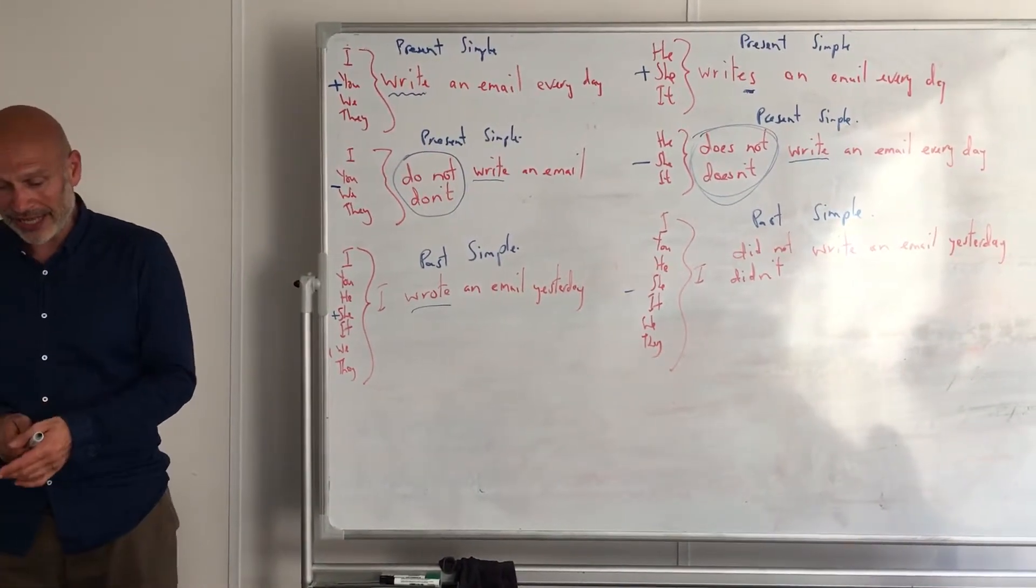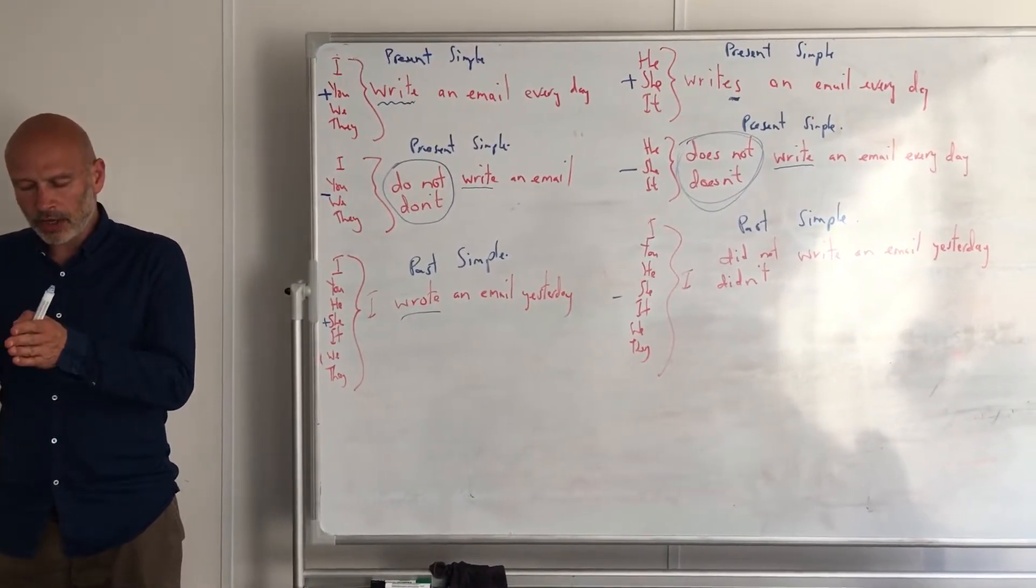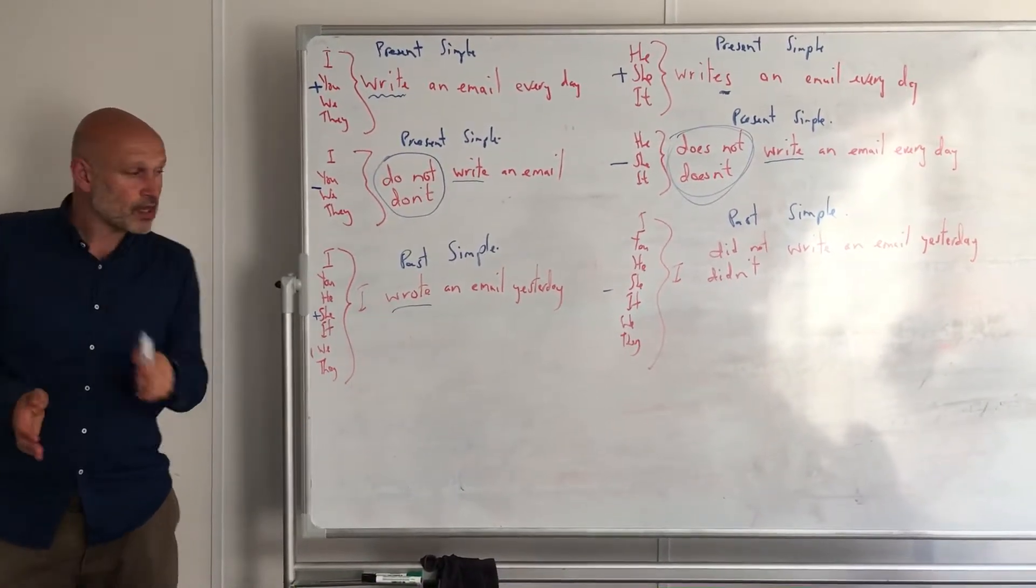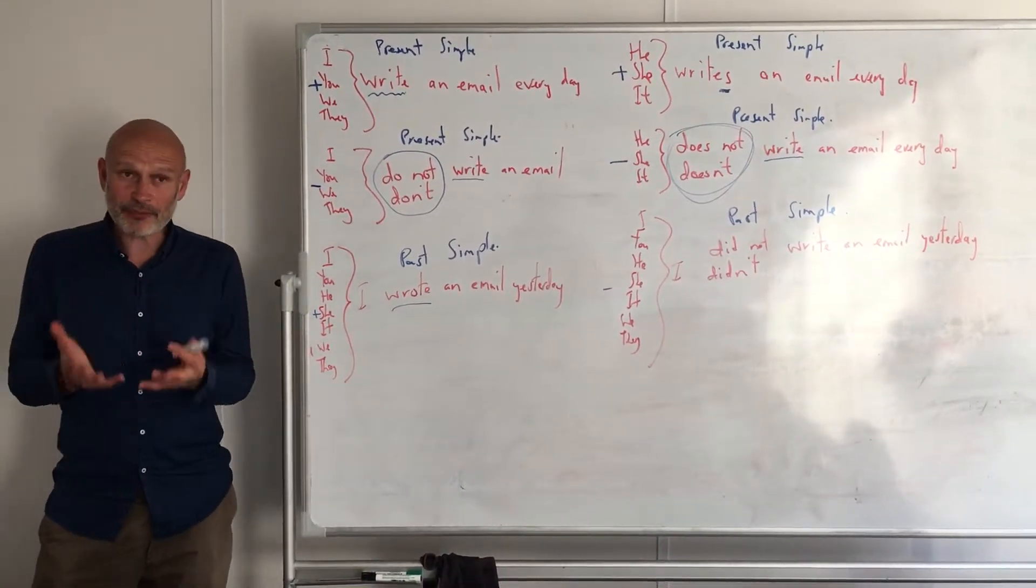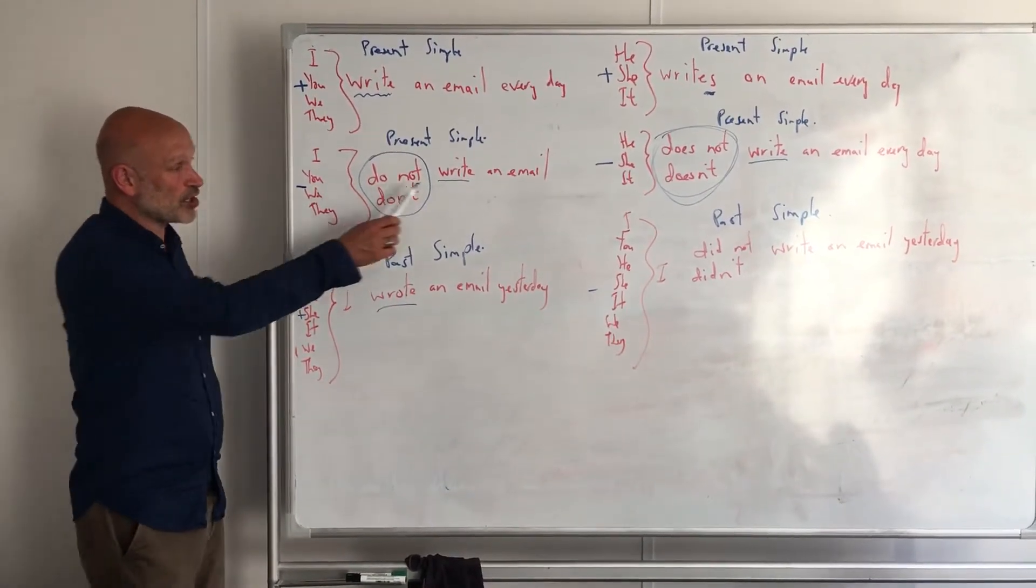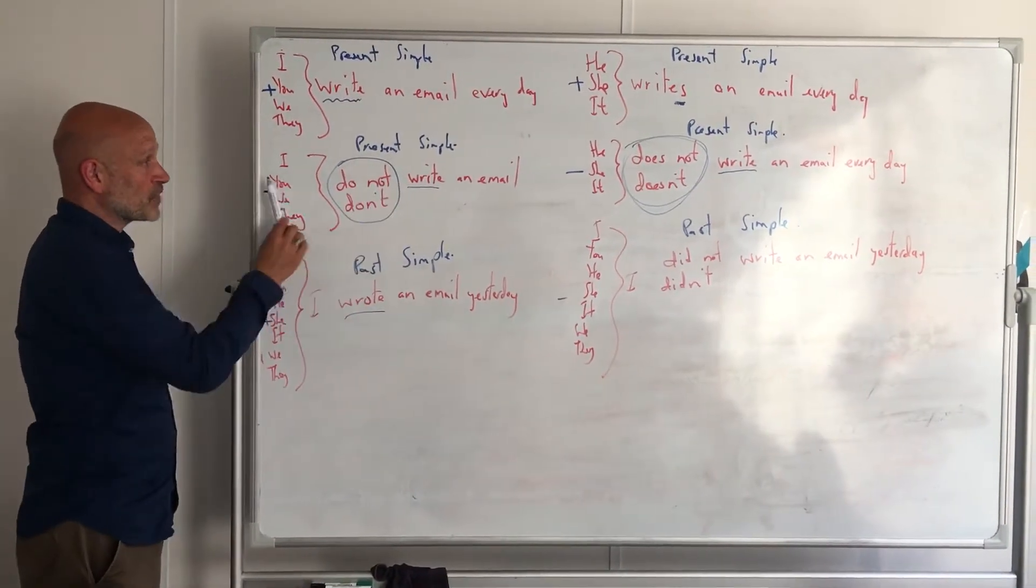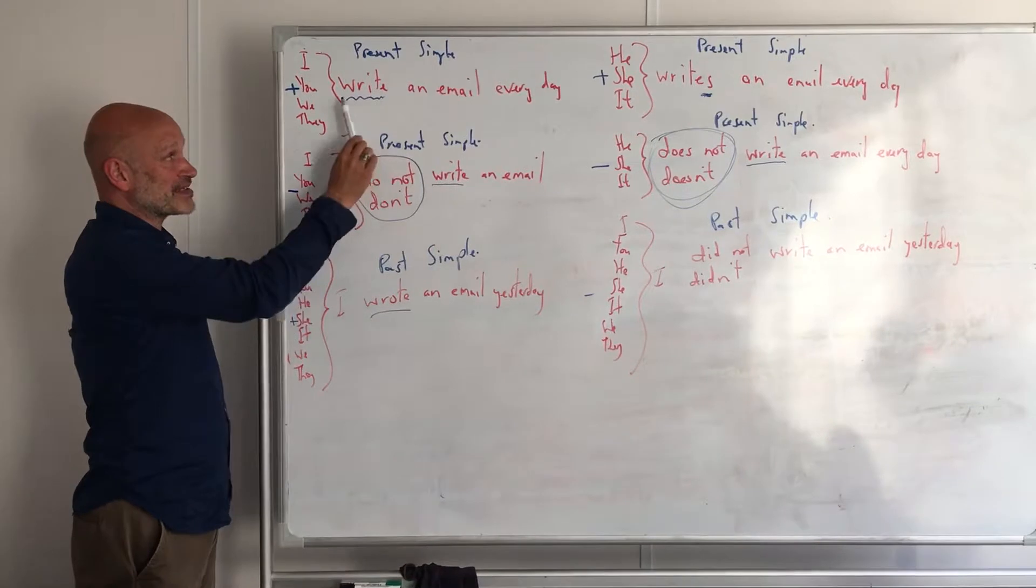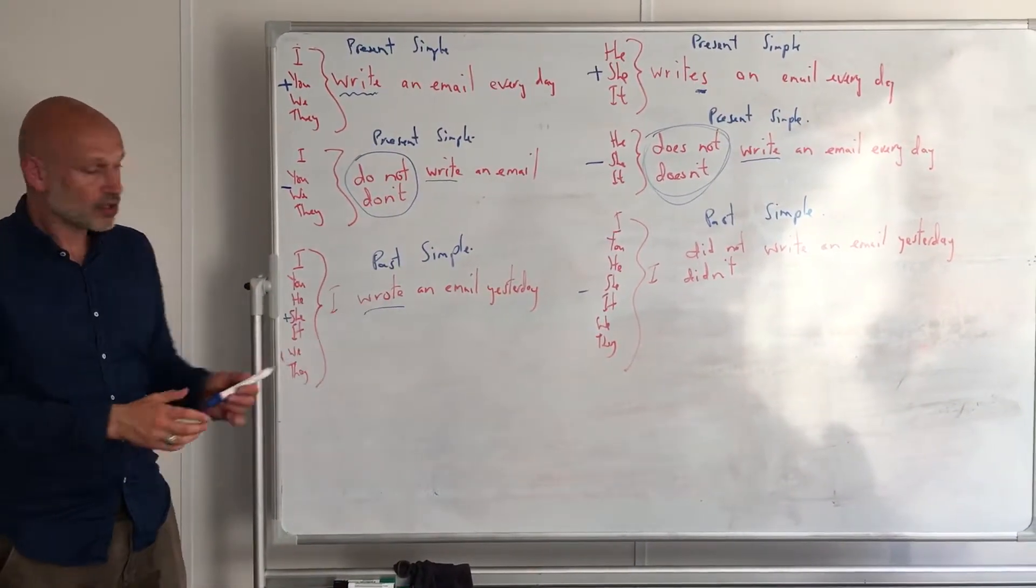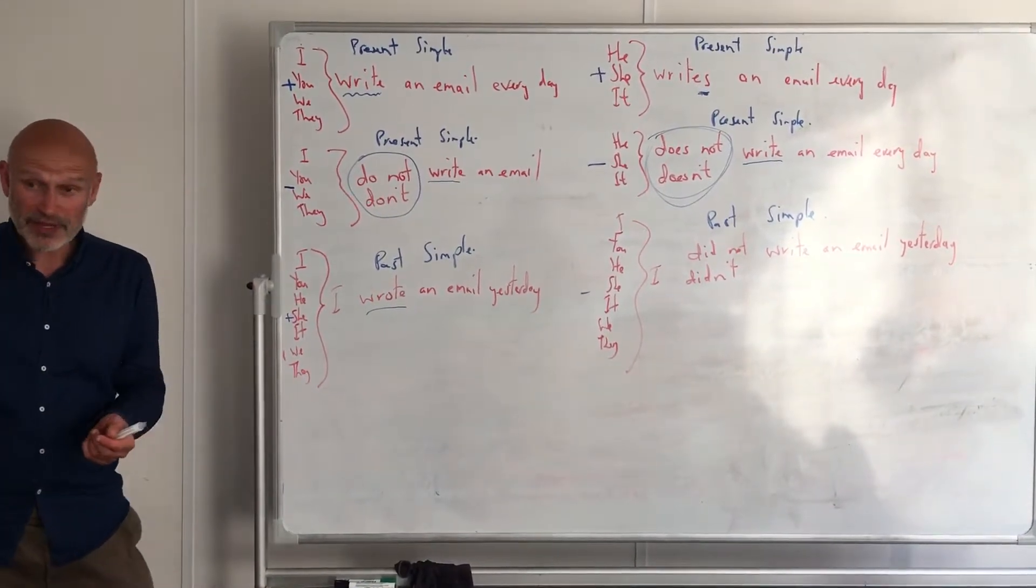And some verbs are normal, regular verbs where you just say 'I work, he worked,' we just add ED. But a lot of verbs—there are about 150 I think of them—they're called irregular verbs where you've got to learn something very different about the verb. Here in the present is 'I write' or 'he writes,' in the past it's 'wrote' for I, you, he, she, it, we, and they.